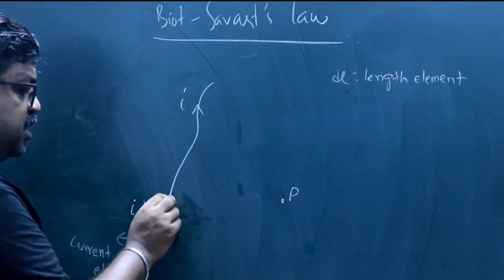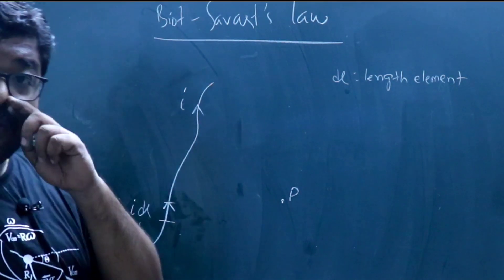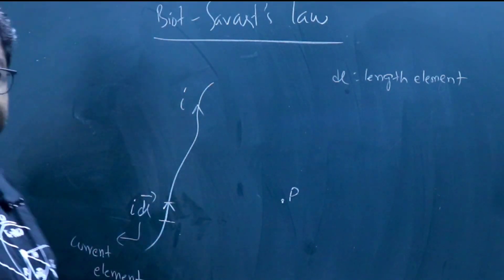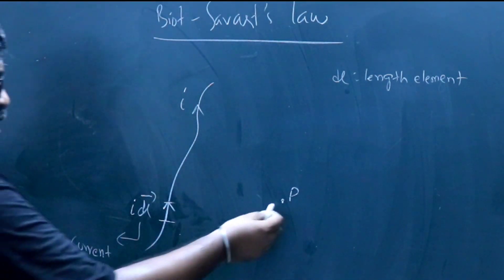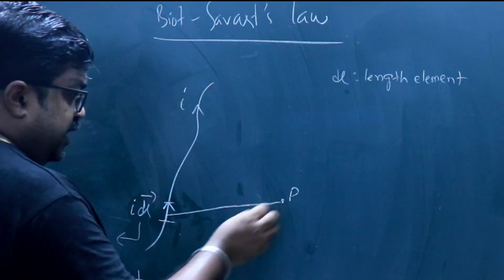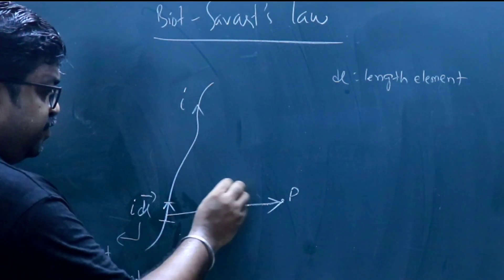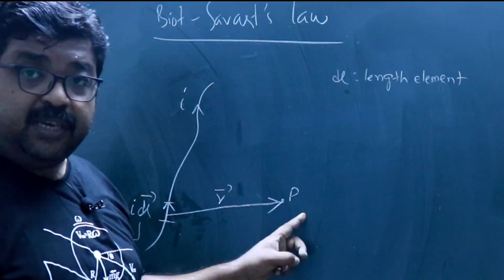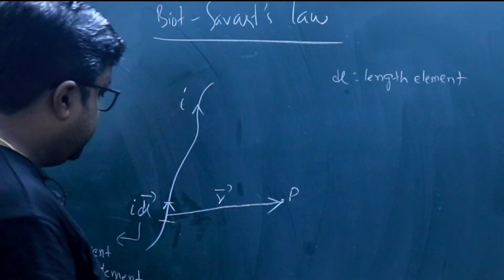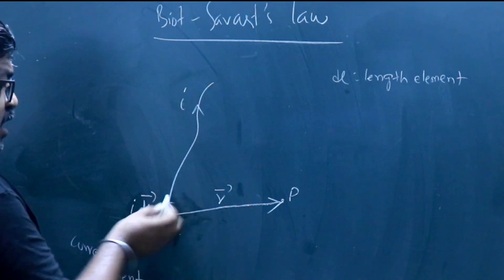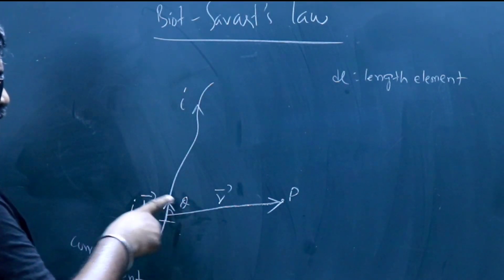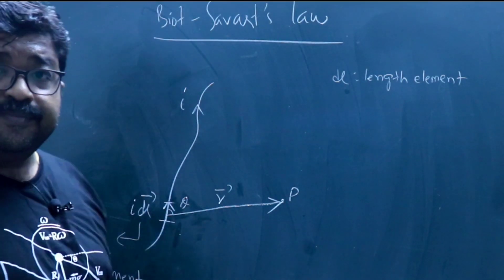But when we write idl as the current element, it is a vector quantity and it is always in the direction of flow of current. So since current is flowing in the upward direction, idl will also be in the upward direction — the vector symbol is marked over dl. We join point P from the midpoint of this current element, and this is vector r, which defines the position of P with respect to the current element. This is the cause of magnetic field at P. The direction of idl, the direction of r, and the angle between them is theta.